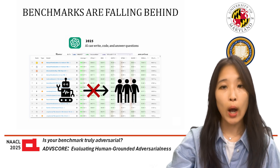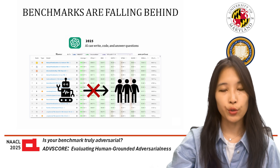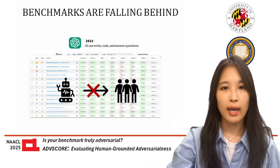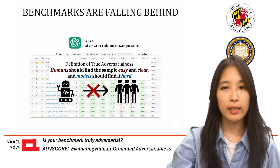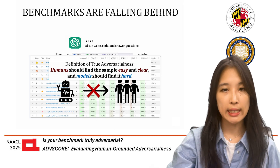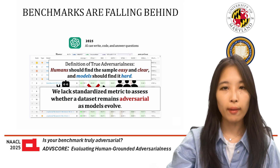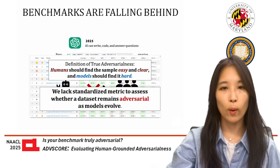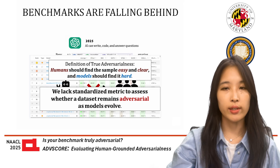So how do we know if a benchmark is still useful? And how do we measure whether a question in a dataset is truly adversarial, meaning that they are hard for models but natural and easier for humans? The core problem is this: we lack a standardized metric to assess whether a dataset remains adversarial as models evolve.